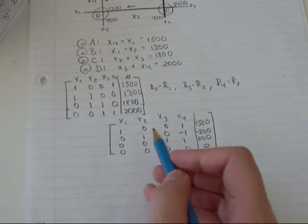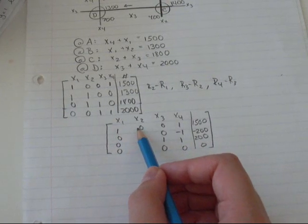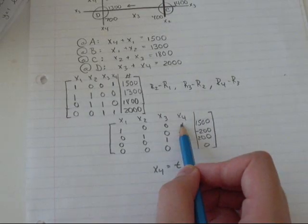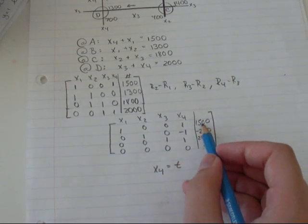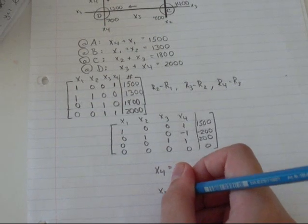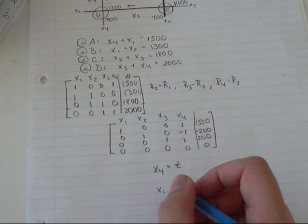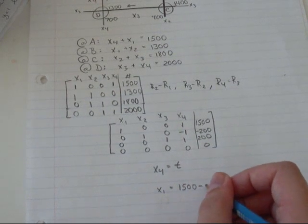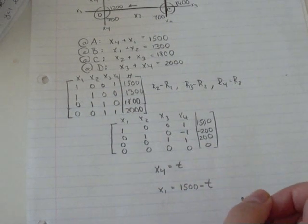Then I have x1 plus x4, x4 is t, equals 1,500. I'm going to write that instead as x1 equals 1,500 minus x4, which turns out to be t.